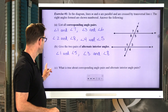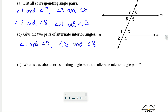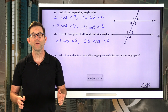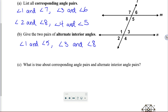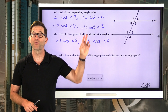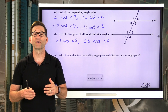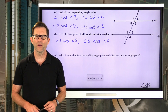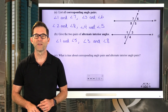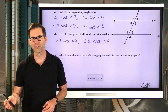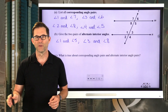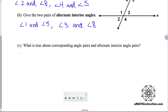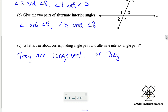Finally, letter C: what is true about corresponding angle pairs and alternate interior angle pairs? For both corresponding and alternate interior angle pairs, the two angles are congruent — or equal in measure. If one of them is thirty degrees, the other one is thirty degrees. If one of them is a hundred and twenty degrees, the other one is a hundred and twenty degrees. The technically precise way of saying it is that they are congruent, but you could also say they have equal measures.